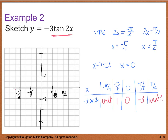Graphing this: vertical asymptotes at -pi/4 and pi/4. At x = -pi/8 the point is (-pi/8, 3); at x = 0 the intercept is (0, 0); at x = pi/8 the point is (pi/8, -3). Connecting these shows the tangent shape is flipped due to the negative coefficient, going from upper left to lower right.